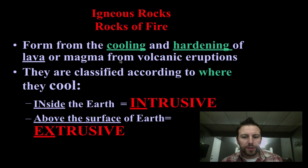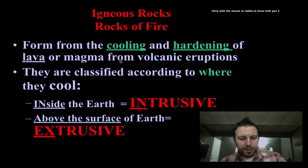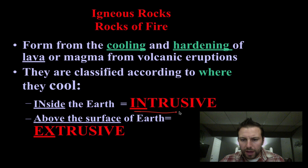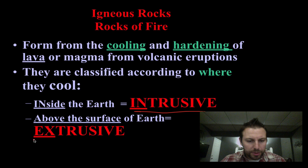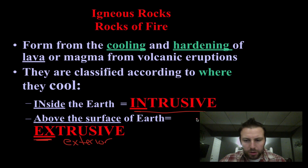Depending on where the lava cools — inside the earth or on the surface — we get very different classifications. Molten material that cools inside the earth is called intrusive. Material that cools outside on the surface is called extrusive — think of exterior for extrusive and interior for intrusive.